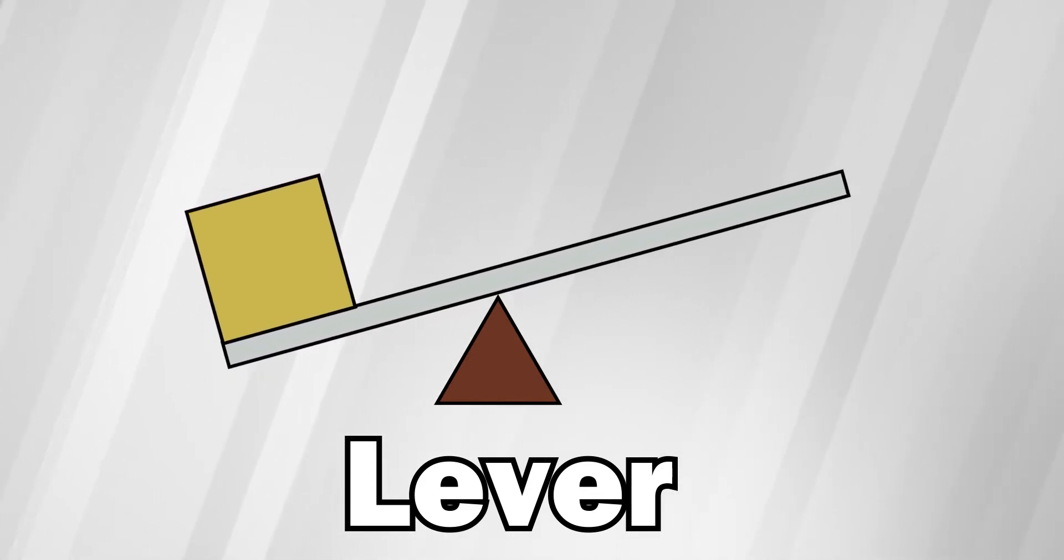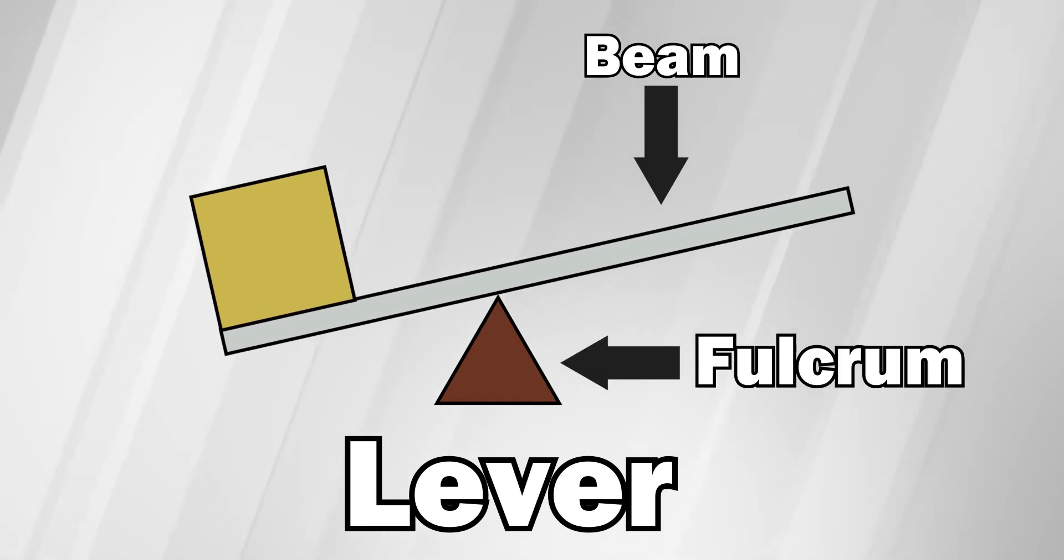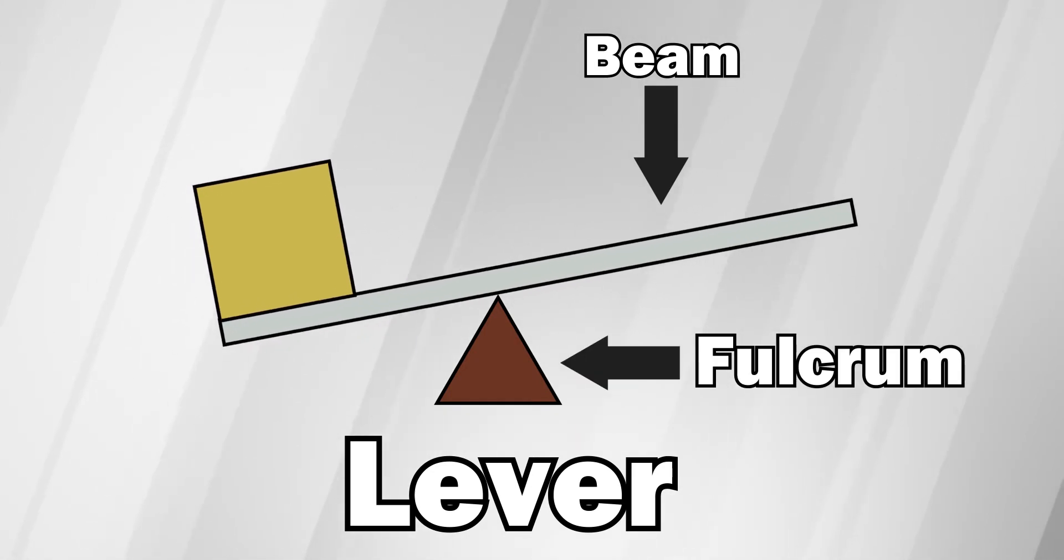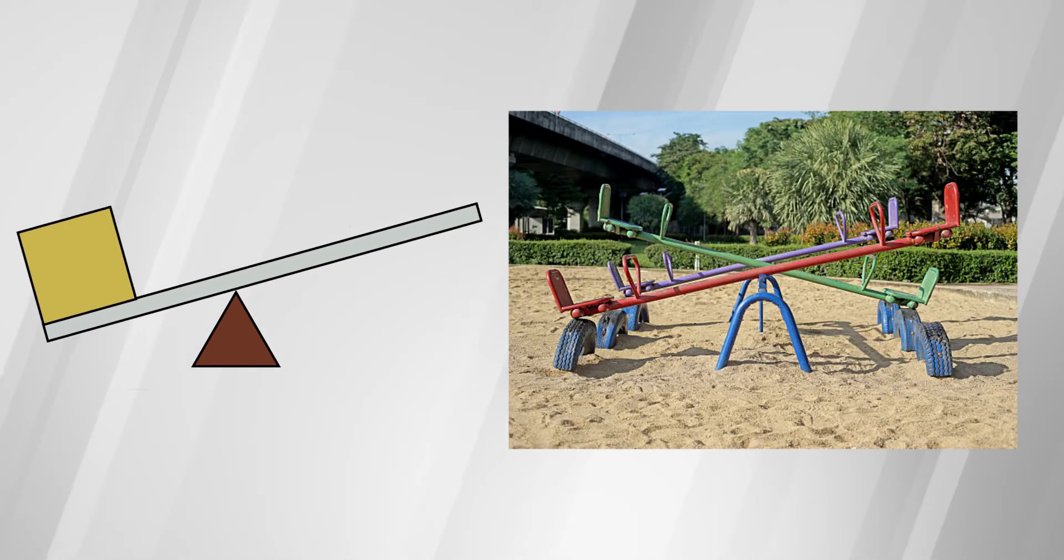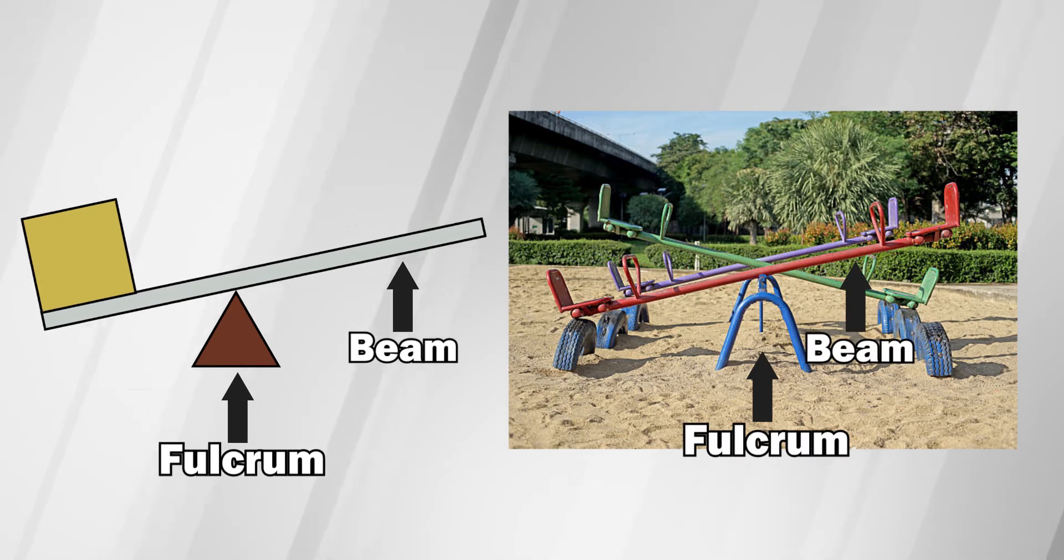A beam and a fulcrum, a point around which the beam pivots or turns. This kind of looks like a seesaw, which makes sense since a seesaw is a type of lever, complete with beam and fulcrum.